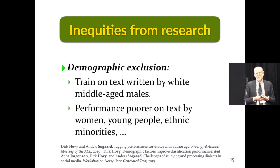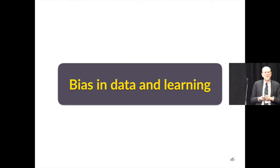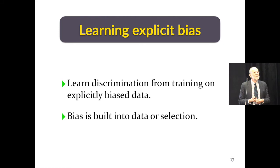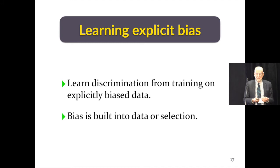I want to now turn to inequities and bias that arise from our methods and our data. The first kind of bias we can have is if we learn discrimination from training data that's explicitly biased in the first place. No surprise — the system is going to learn that bias, except all too often it is a surprise, because nobody expected that bias to be there. The data itself, or the selection of the data, leads to the bias. I'll give you two examples.